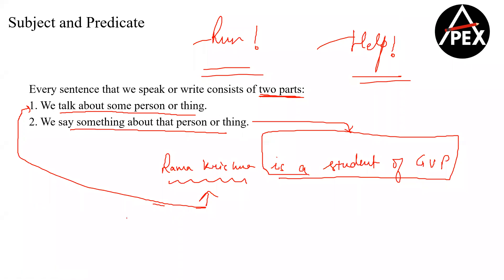The first part is someone we talk about — I'm indicating a person or something. So Ramakrishna is the person I am talking about. I am talking about that person — that's the first part — and what I'm talking about is the second part.